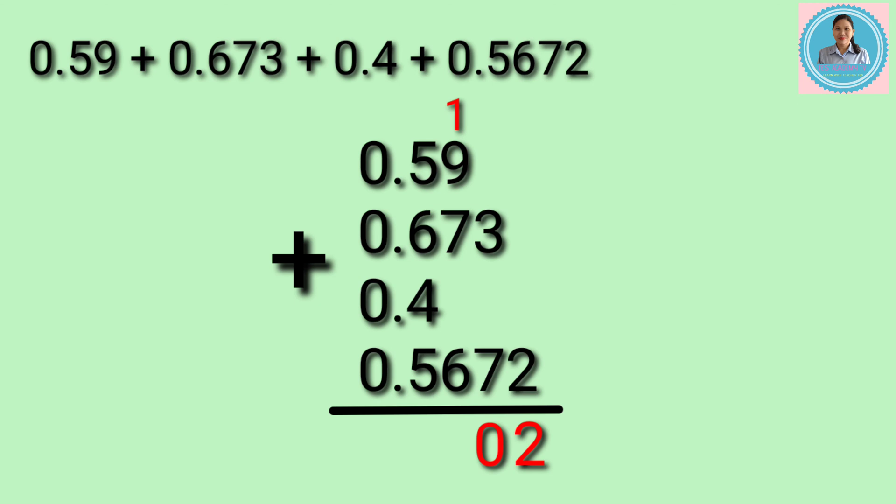Next, add all the digits in the hundredths place: 1 plus 9 plus 7 plus 6 equals 23. Bring down 3 and then carry 2. Next, add the digits in the tenths place: 2 plus 5 plus 6 plus 4 plus 5 equals 22. Bring down 2 and then carry 2.